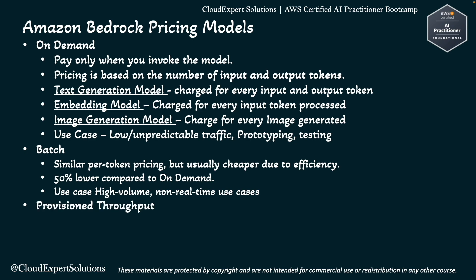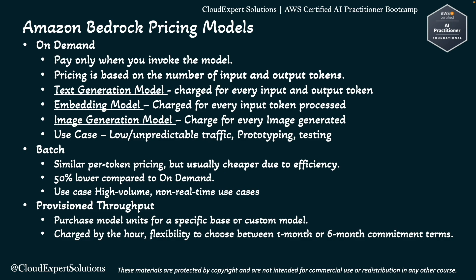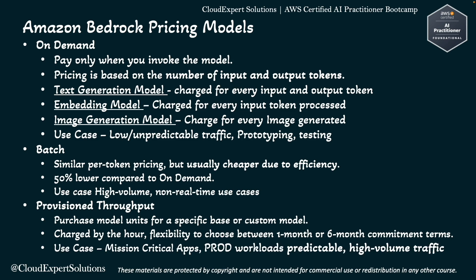The last pricing model is Provisioned Throughput. With Provisioned Throughput mode, you can purchase model units for a specific base model or a custom model. You are charged by the hour, with the flexibility to choose between a one-month or six-month commitment. Provisioned Throughput is best for mission-critical applications, production workloads with predictable high-volume traffic, and companies that require SLAs.